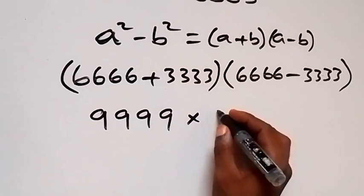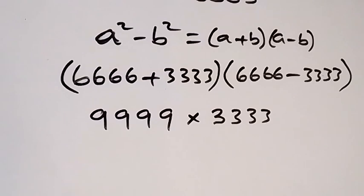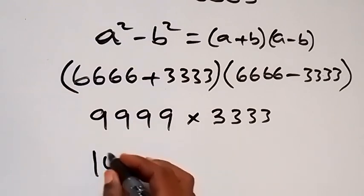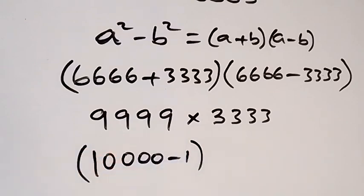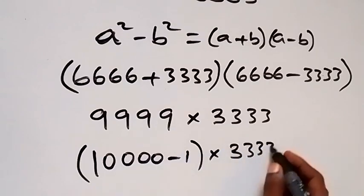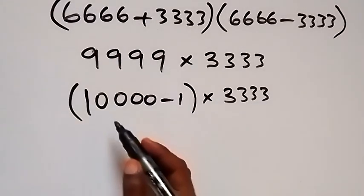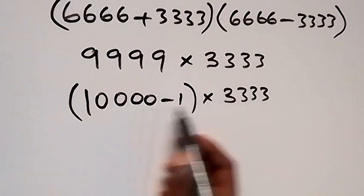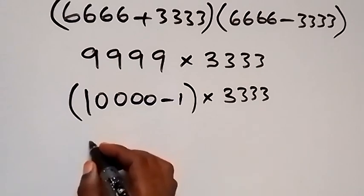From here we can also rewrite 9999 as 10,000 minus 1. So we can write this as that, then multiply by 3333. We can use this 3333 to open this bracket.